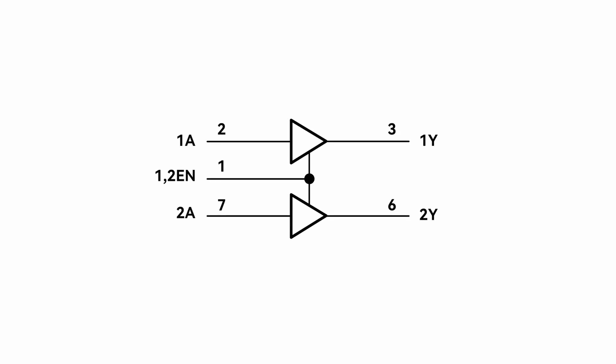Inside the L293D, four transistors control the motor's direction. When 1,2EN is set to high level, meaning it is enabled, the states of 1A and 2A determine the direction of current flow, thus controlling the motor's rotation direction. If 1A is high and 2A is low, the current flows from 1Y to 2Y. If 1A is low and 2A is high, the current flows from 2Y to 1Y.